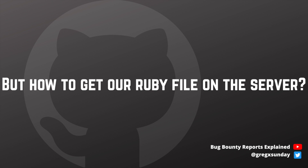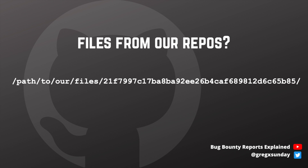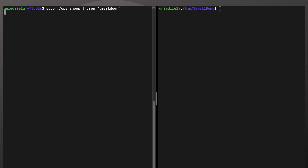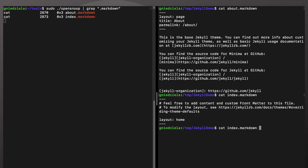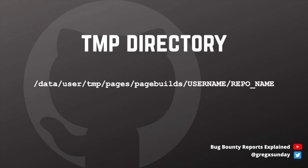But first we need to upload our Ruby file onto the server to a location known to us. This is not a trivial task because files from repositories are stored in hash locations, which means we cannot predict where they are. The researcher tested this on his own version of GitHub Enterprise, so he had access to the server. He used the opensnoop tool to see what files were being opened, and noticed that before being transferred to the hash location, files are put into a temporary directory — and the path of that directory was fully predictable.